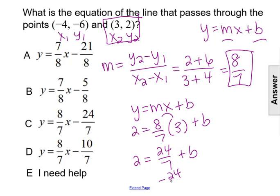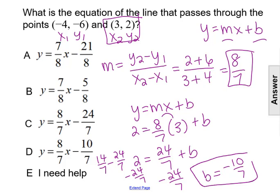And we'll subtract 24 over 7 from both sides. 2 minus 24 over 7, thinking of that as 14 over 7 minus 24 over 7, which gives us a value of b equal to negative 10 over 7.